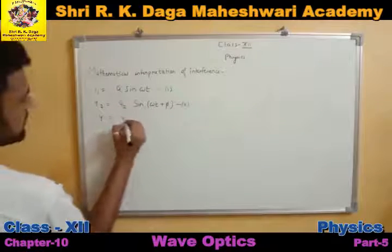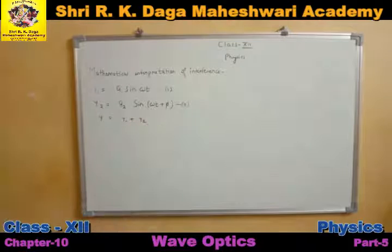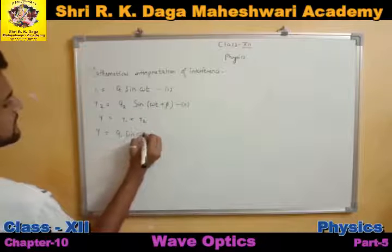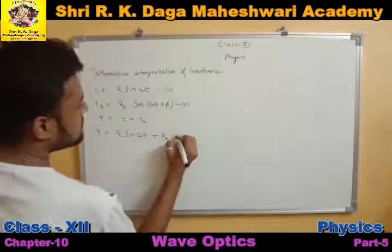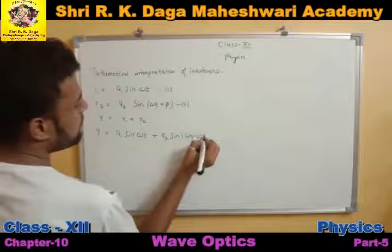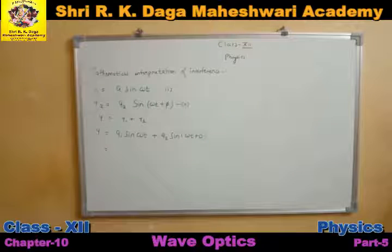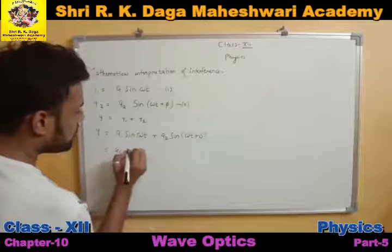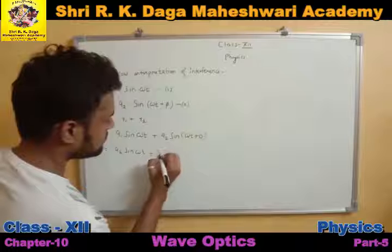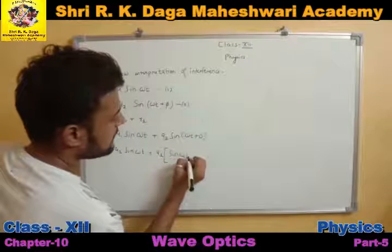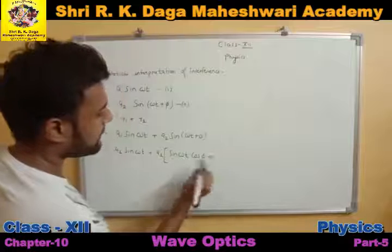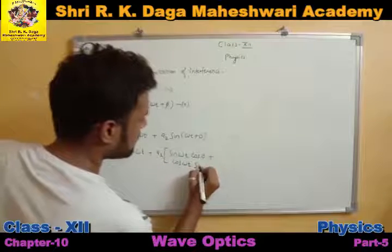By the principle of superposition, the net displacement y = y1 + y2. Substituting the values: y = a1 sin(ωt) + a2 sin(ωt + φ). Now we can apply the trigonometric identity sin(A + B) = sin A cos B + cos A sin B. So applying this identity with A = ωt and B = φ, we expand the a2 term and get: y = a1 sin(ωt) + a2 sin(ωt) cos φ + a2 cos(ωt) sin φ.